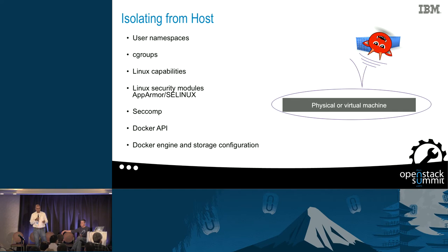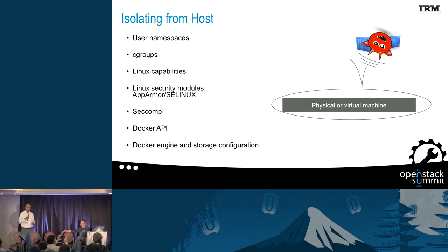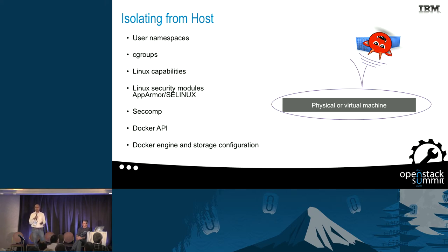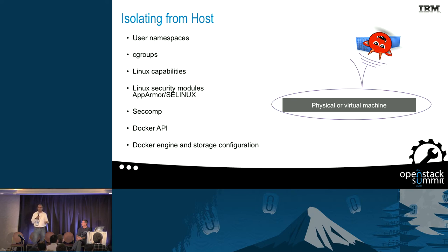For isolating the host from rogue containers, there are capabilities mostly in the Linux kernel: user namespaces, cgroups, Linux capabilities, Linux security modules, seccomp, the Docker API, and Docker engine and storage configuration. Philip implemented user namespaces in Docker 1.9.